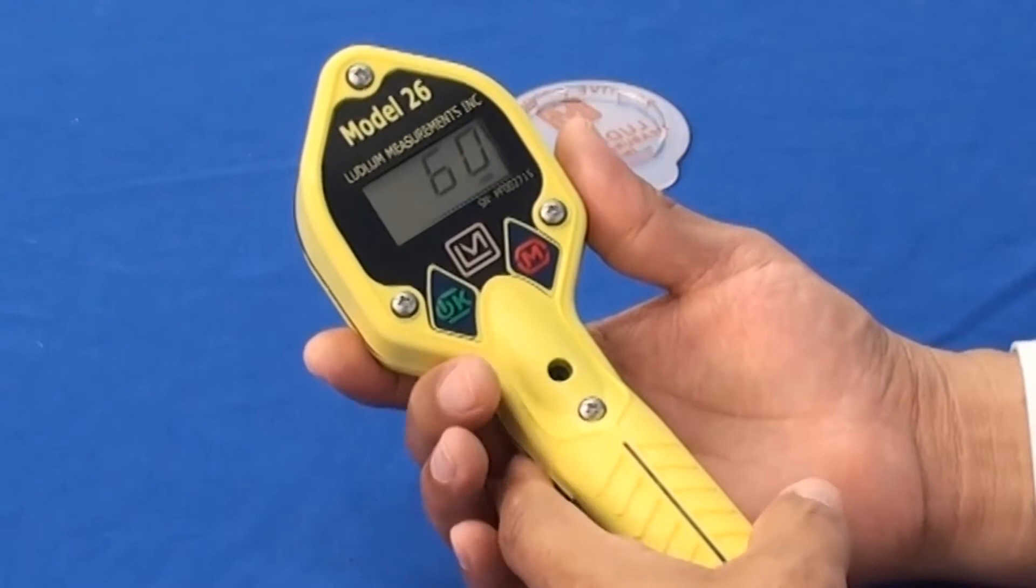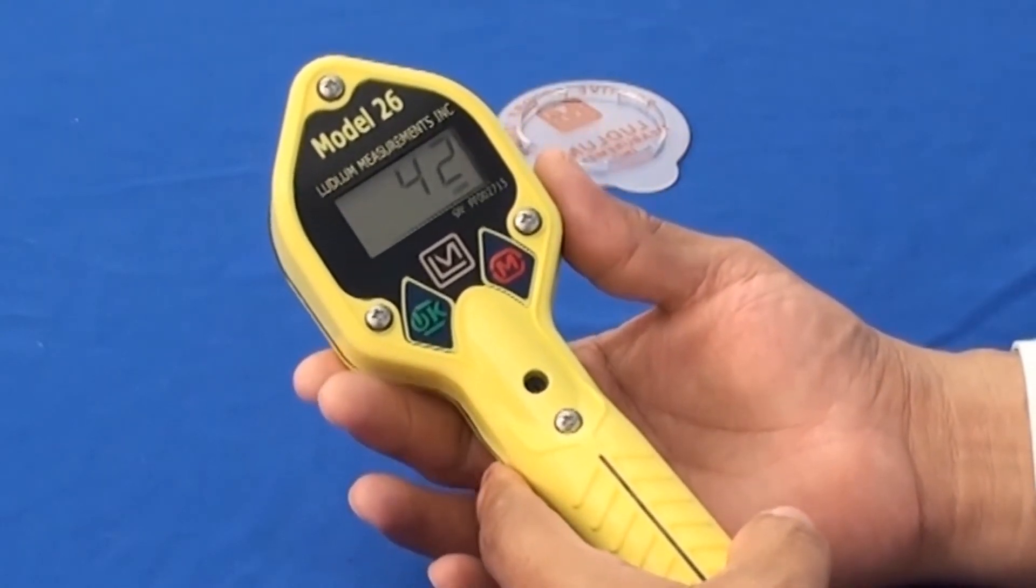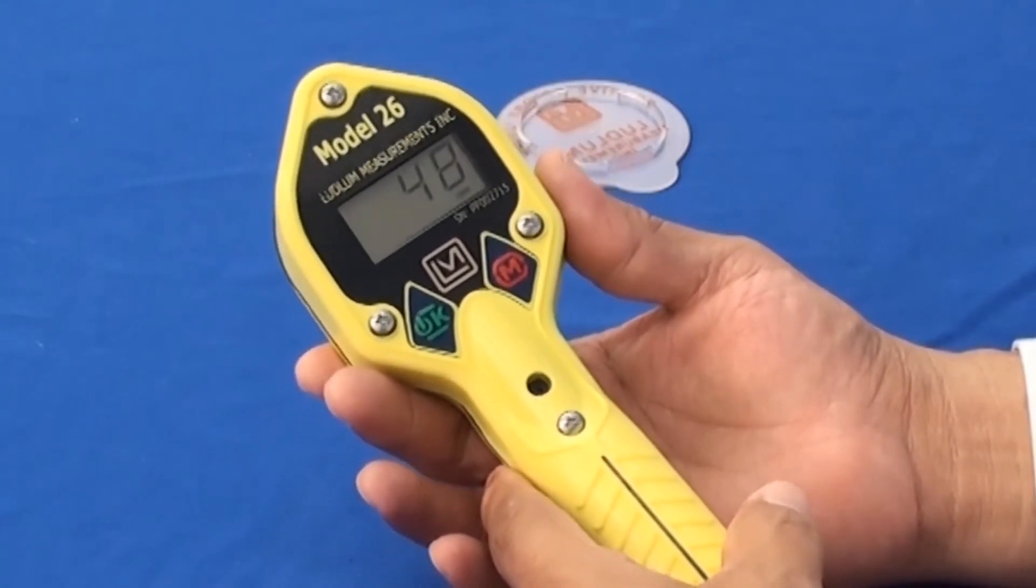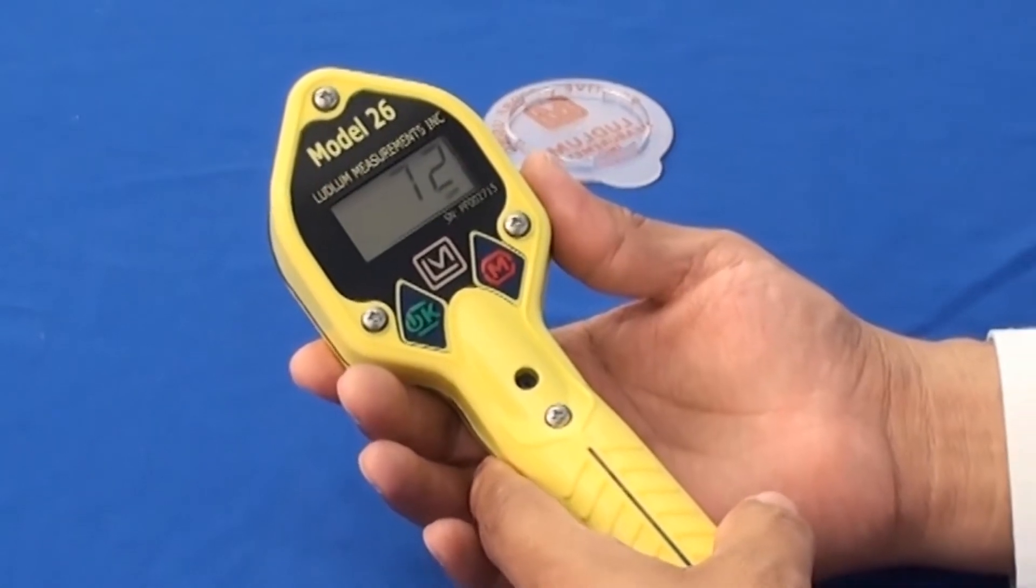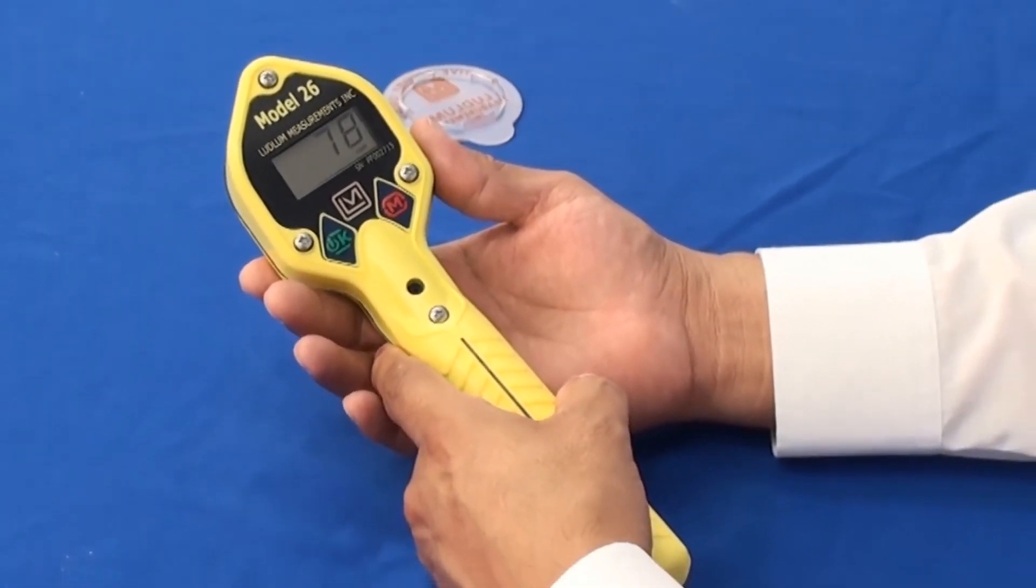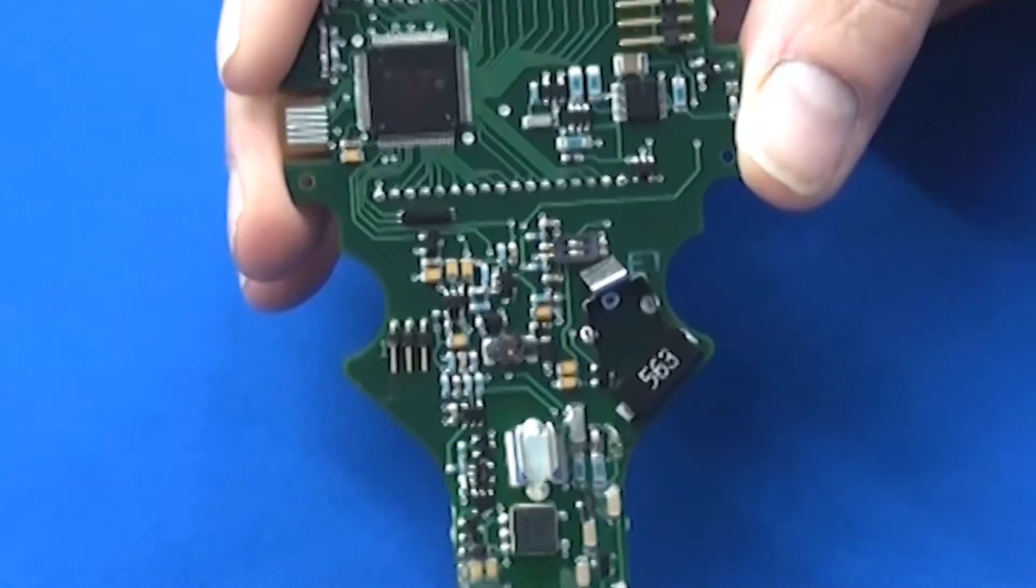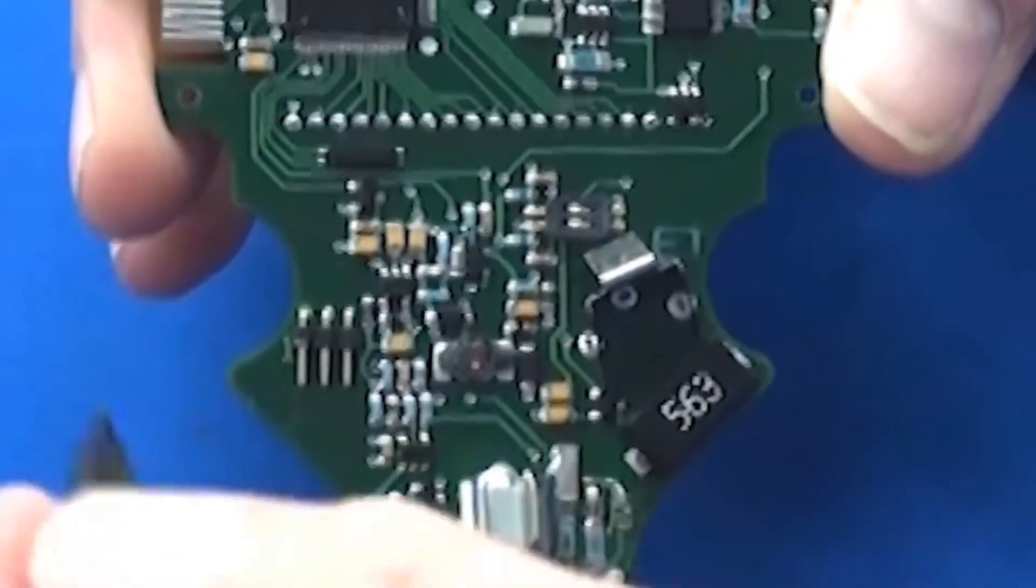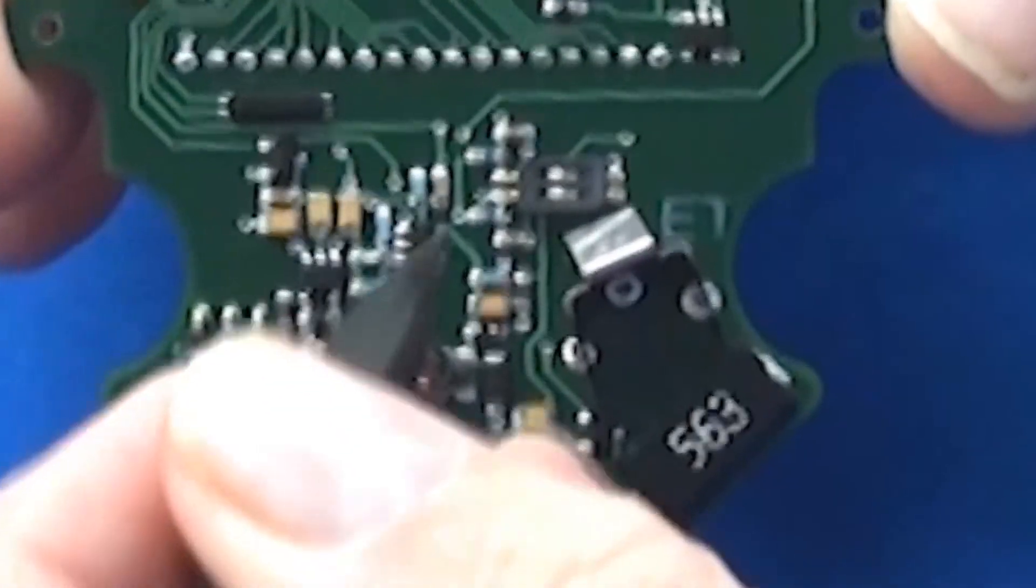Internally on the model 26, you have a two pole dip switch strip. Dip switch number one and dip switch number two. Here's an example of the dip switch operation provided by Randy Smith.